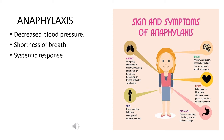The skin is also affected — hives, swelling, itchiness, widespread redness, etc. — and the digestive system is affected because the person feels nauseated, has a vomiting feeling, and might also have diarrhea. So that is when anaphylaxis occurs, and that is why anaphylaxis is called the systemic response.